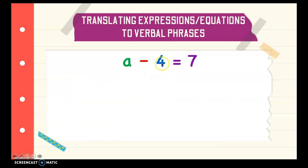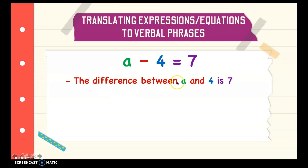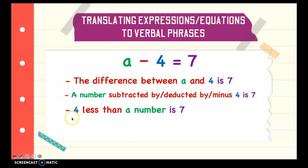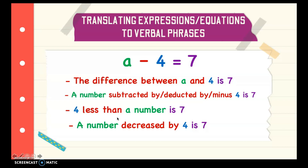Next we have a minus 4 is equal to 7. To translate that into verbal phrases, we can say the difference between a and 4 is 7. Or you can say a number subtracted by, or deducted by, or minus 4 is 7. We also have 4 less than a number is 7. So we have 4 here, then less than because of subtraction, a number, which is 7. We also have a number decreased by 4 is 7.